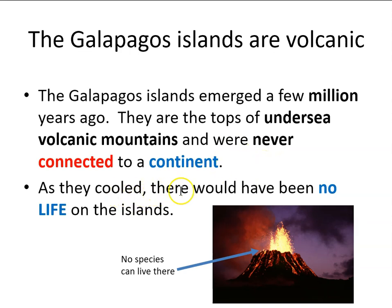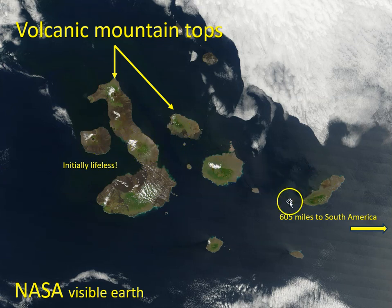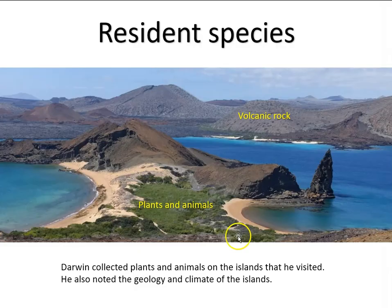As the islands cooled, there would have been no life on them — there is no species on Earth that can live in molten lava, molten rock. Here we see the islands from the air; these are just the tops of undersea volcanic mountains piercing the surface of the water. When Darwin arrived, he encountered various kinds of plants and animals and collected as many specimens as he could, while also making notes on the volcanic landscape and climate.